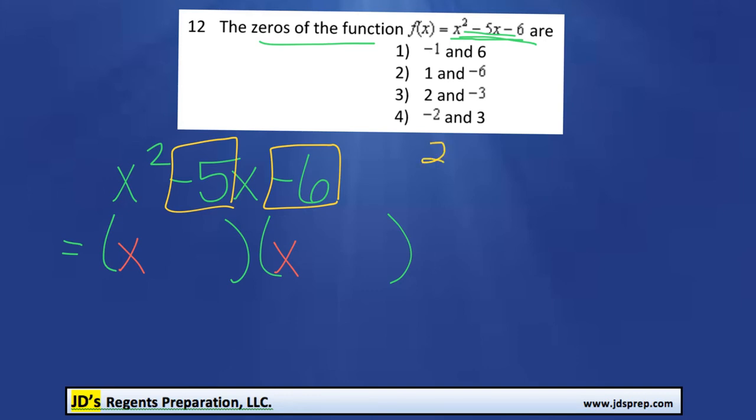Because 2 and 3, in order to multiply those together to get negative 6, one of them would have to be negative. So if we had negative 2 plus 3, that would get us 1. Or 2 plus negative 3 gets us negative 1. So that actually doesn't work.